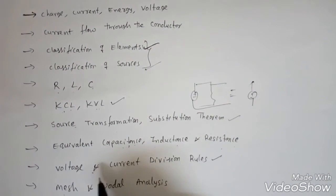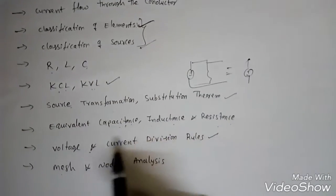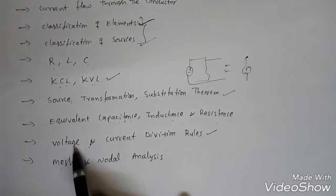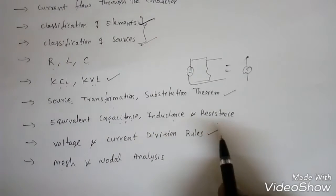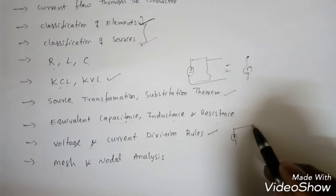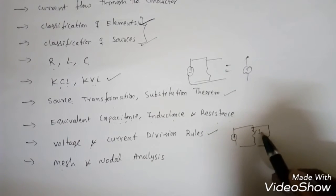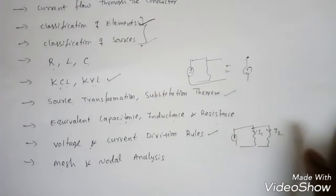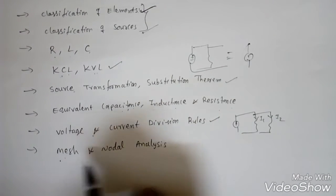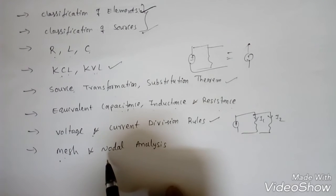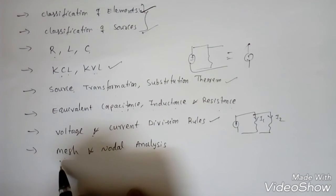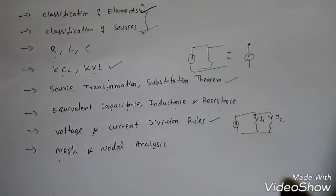Next we covered the voltage division rule and the current division rule. The voltage division rule applies when two or three resistances are in series with a voltage source. The current division rule applies when resistances are in parallel with a current source. Then the very important concepts of mesh analysis and nodal analysis — how to find mesh currents using KVL and node voltages using KCL.